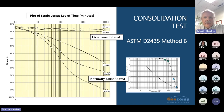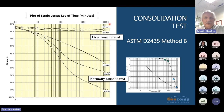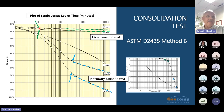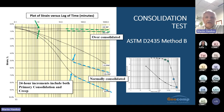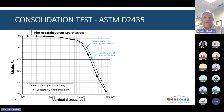Method B of the test standard for 1D consolidation requires acquisition of load increment time plots for all load increments. This plot shows strain versus log time data for several load increments maintained for 24 hours. The plot also shows increasing rate of creep with increasing vertical stress, with large increases occurring in the normally consolidated range. The plot shows increasing time for end of primary consolidation as the sample becomes normally consolidated. Over-consolidated soils consolidate faster than normally consolidated soils.